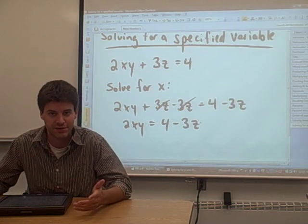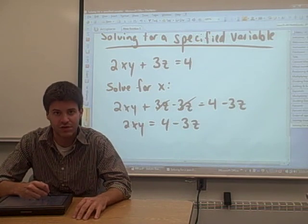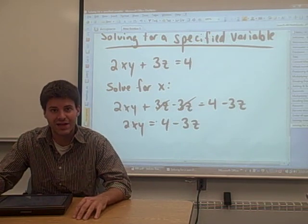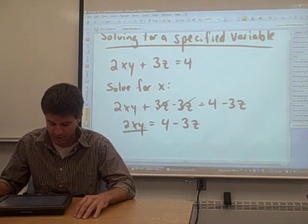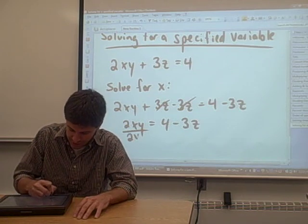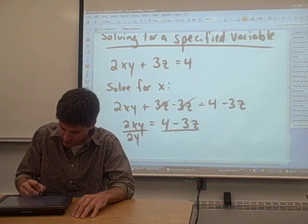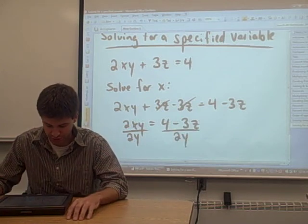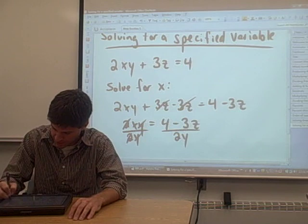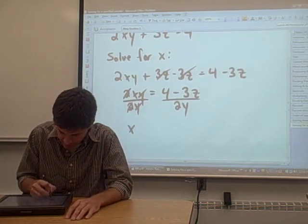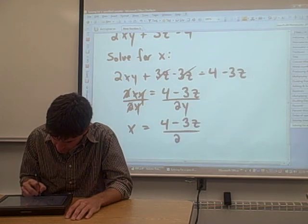We just want to solve for x. So x is multiplied by a 2 and also by a y. In order to get x by itself, we'd have to get rid of that 2 and that y on the left-hand side of the equation. The way that we do that is by dividing the left-hand side by 2y. Anything we do to the left-hand side, we have to do to the right-hand side. The 2's cancel, the y's cancel, and x is now by itself. x equals 4 minus 3z over 2y.